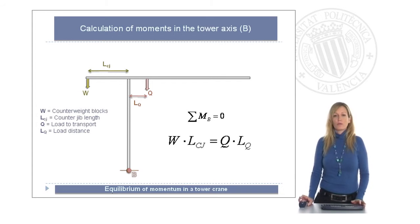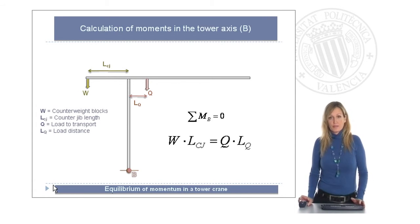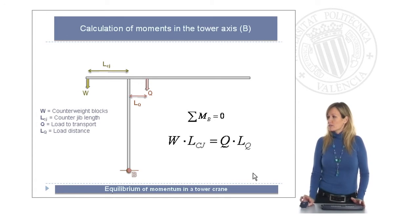Well, in a crane tower, you know that the counterweight blocks is fixed, and also the counter jib length is. So, if we look at this equation, this product has a constant value for each one of the crane towers we can have.